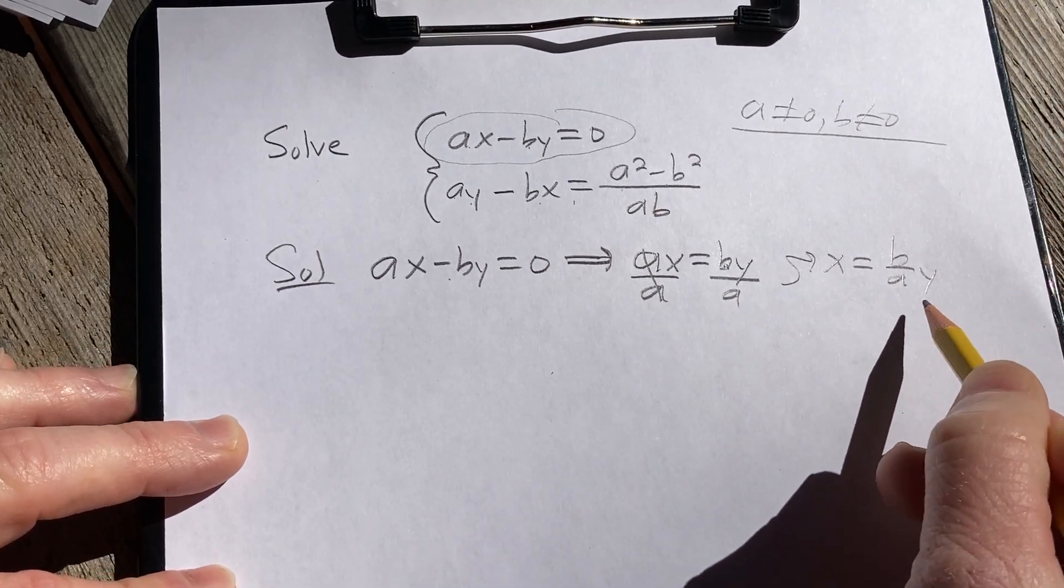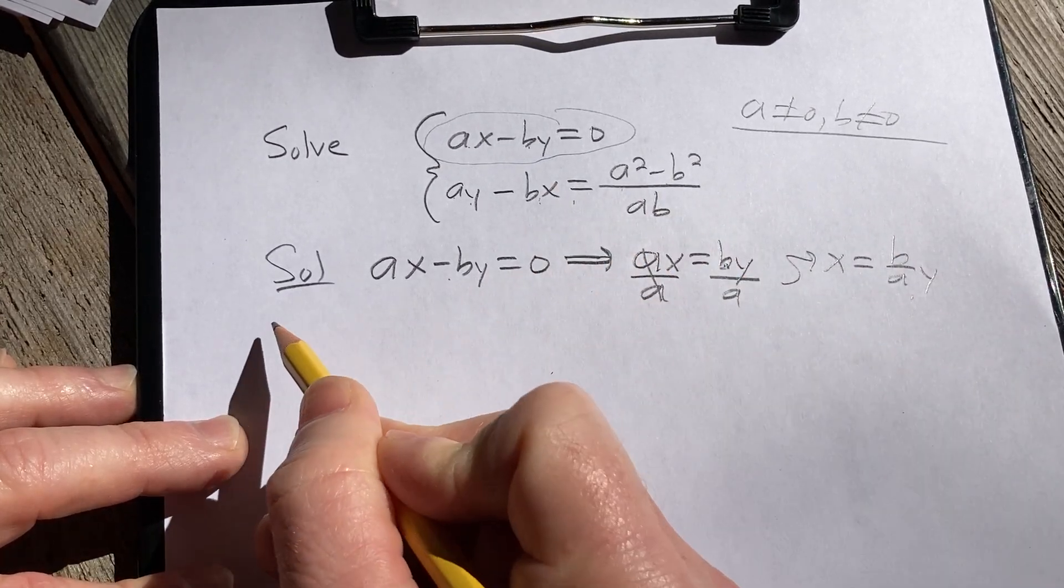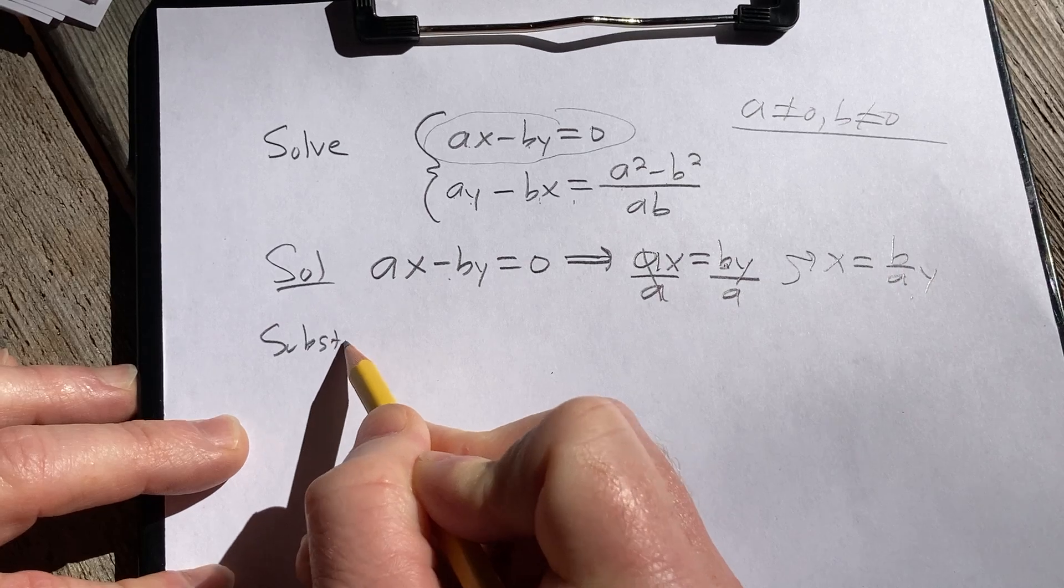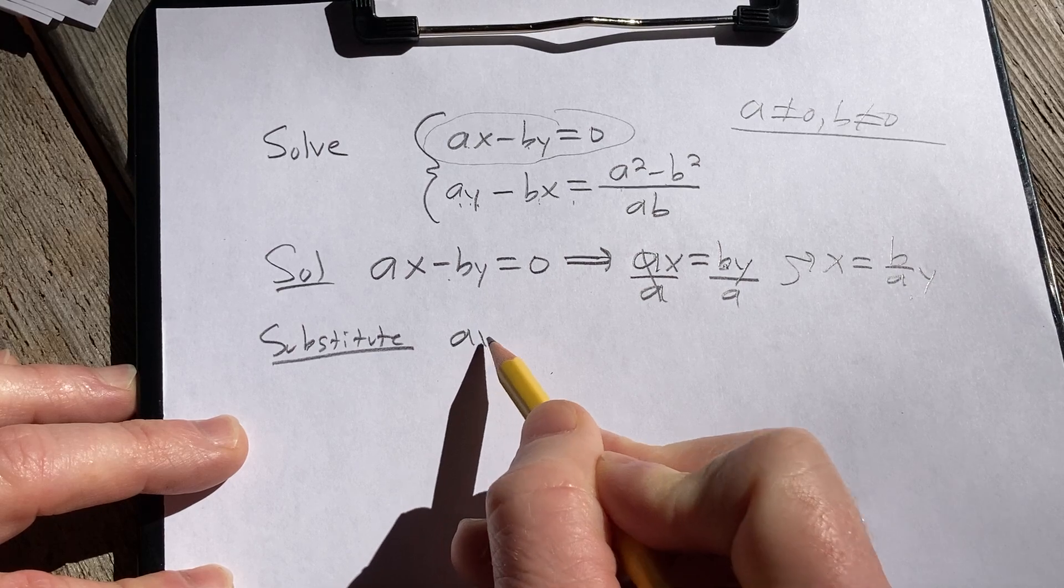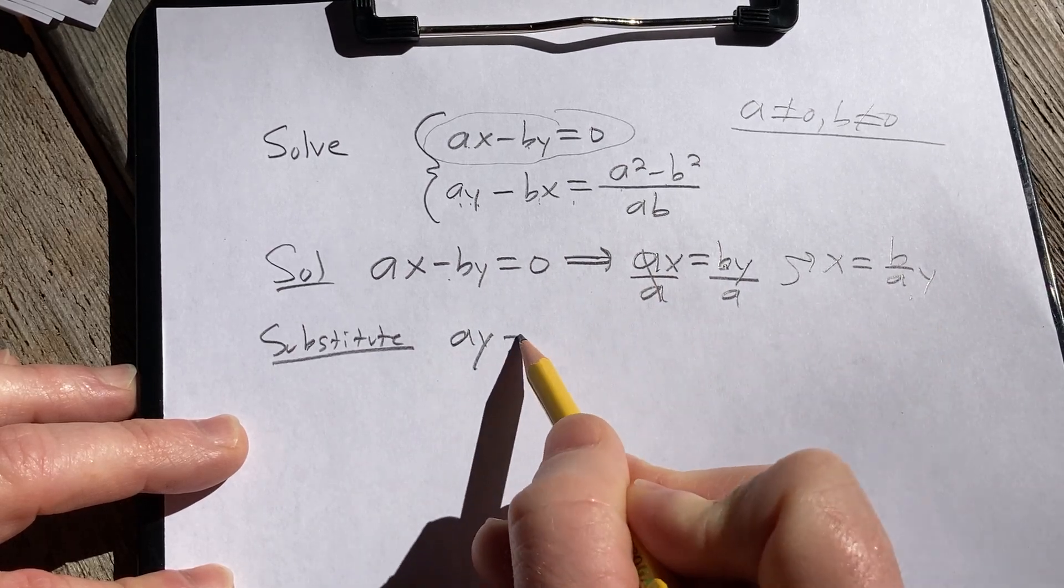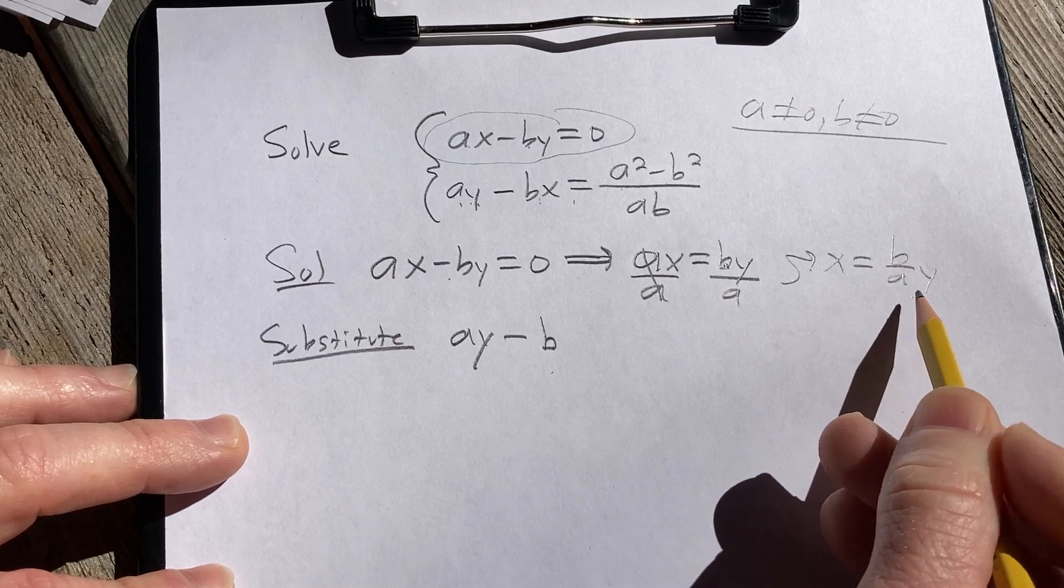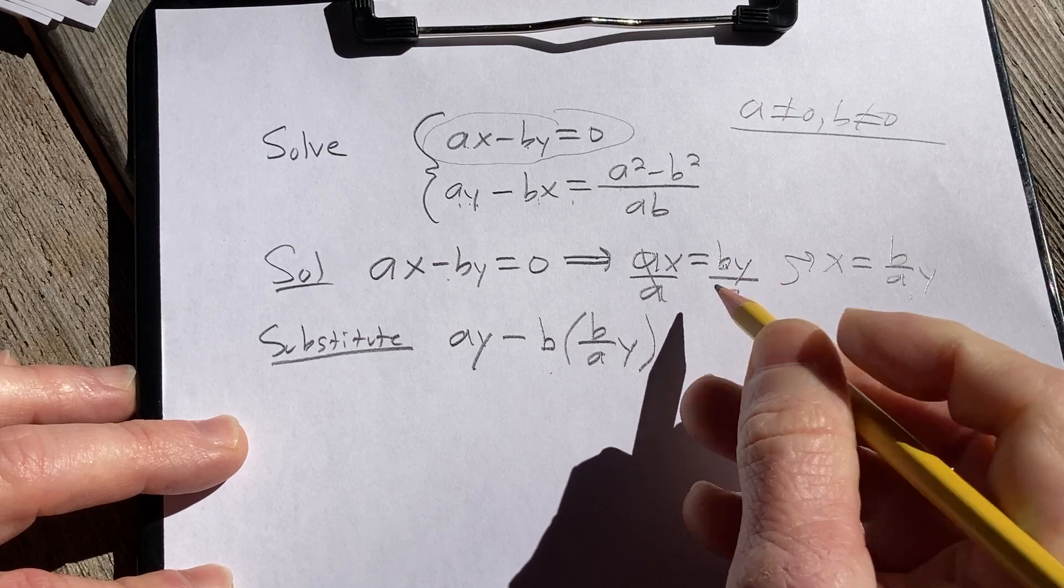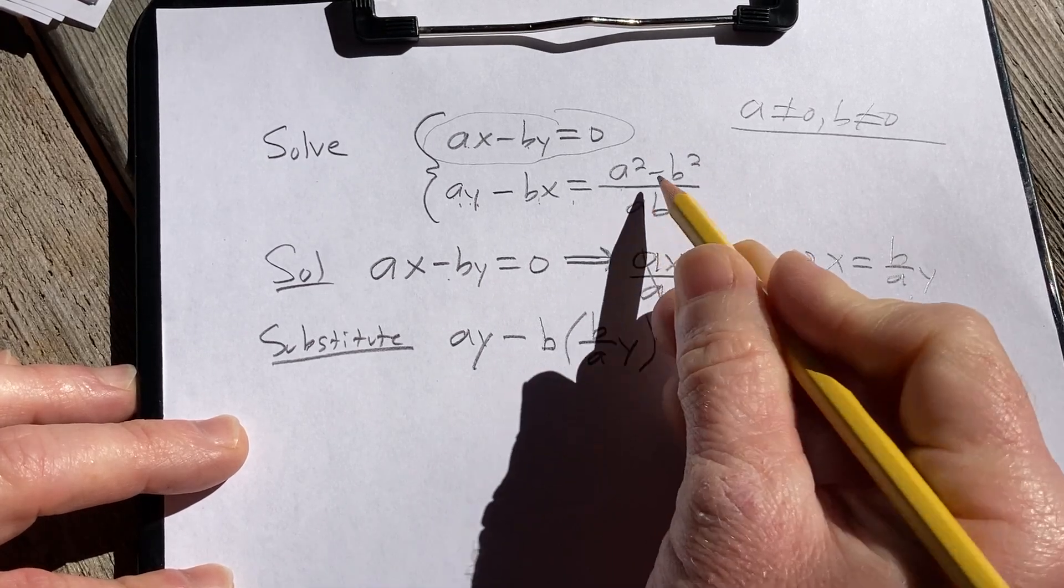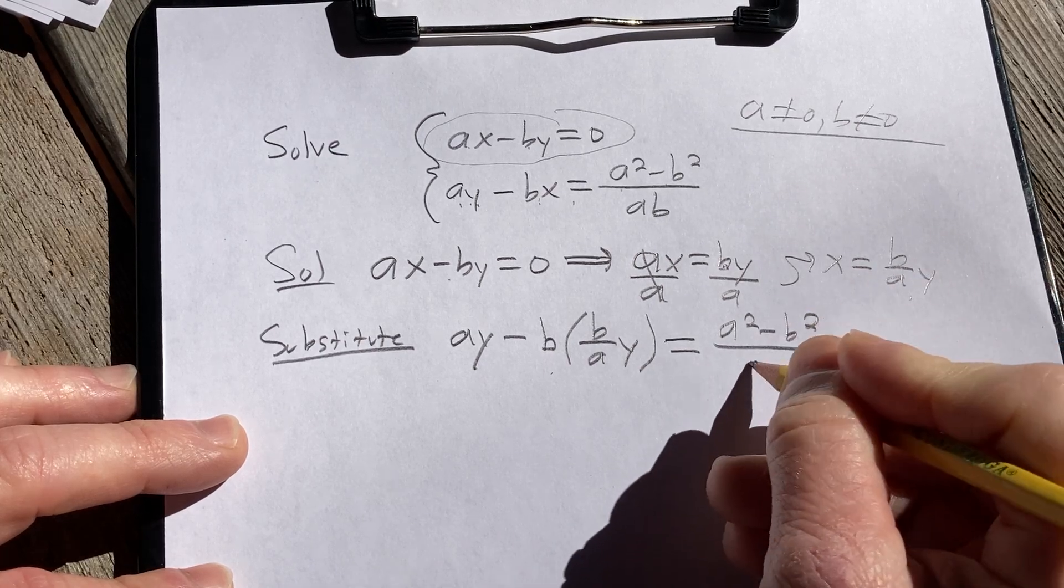So we have x equals b over a times y. Okay, so now let's go ahead and take this and plug it in here. So we're going to substitute. So we have ay, and then minus b, and then our x is b over a times y. This is equal to a squared minus b squared over ab.